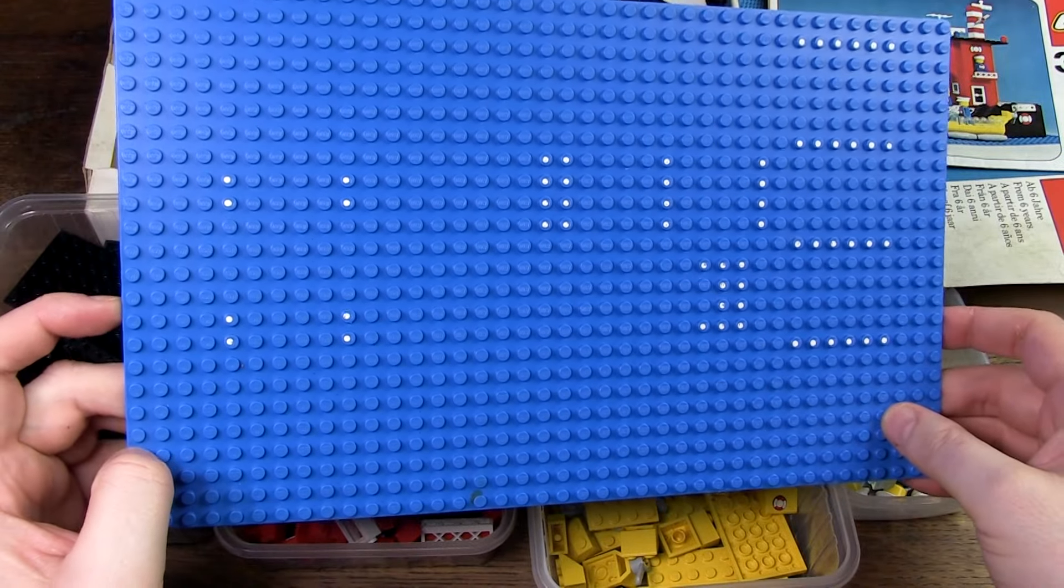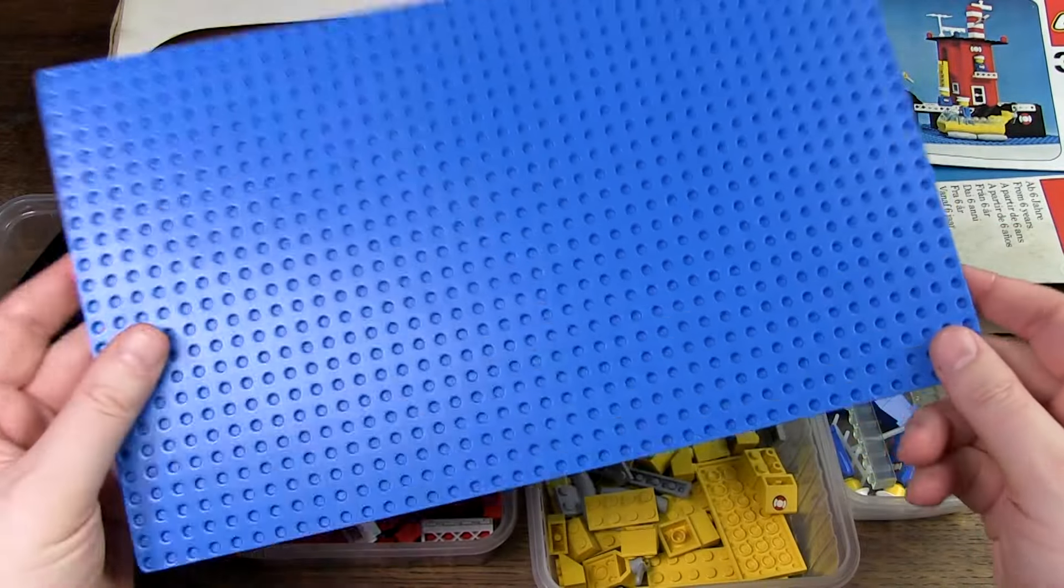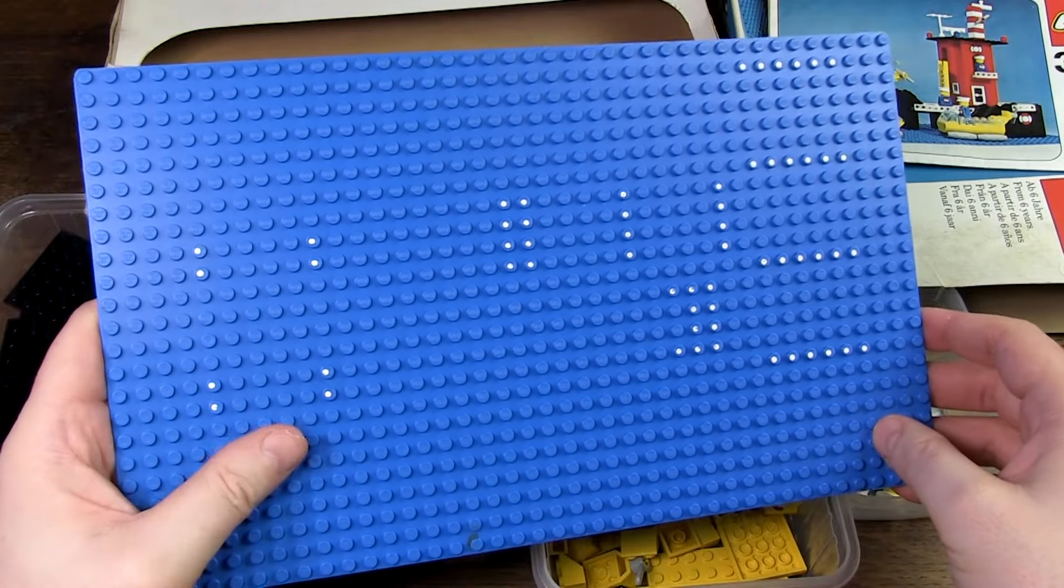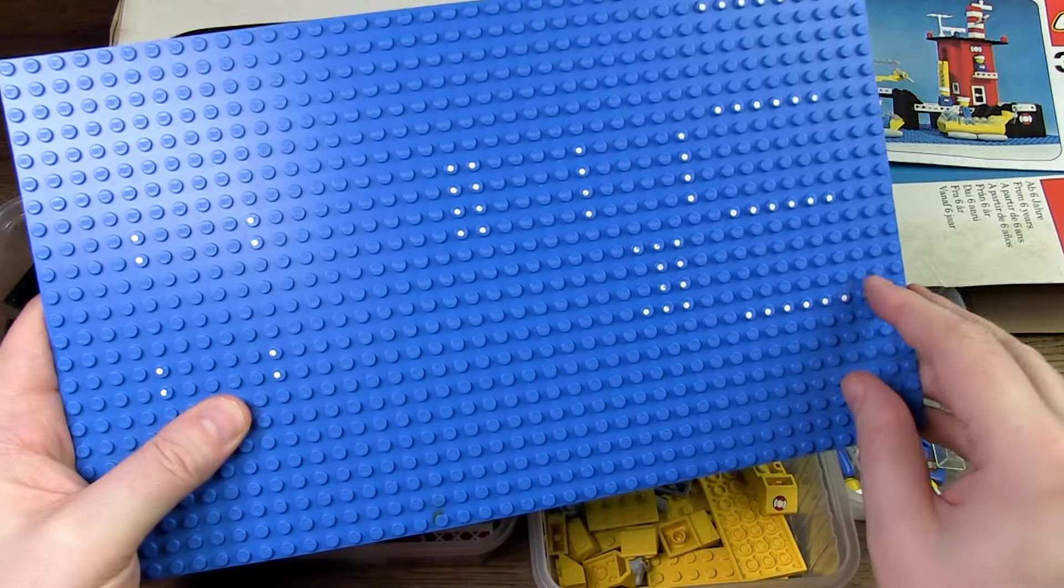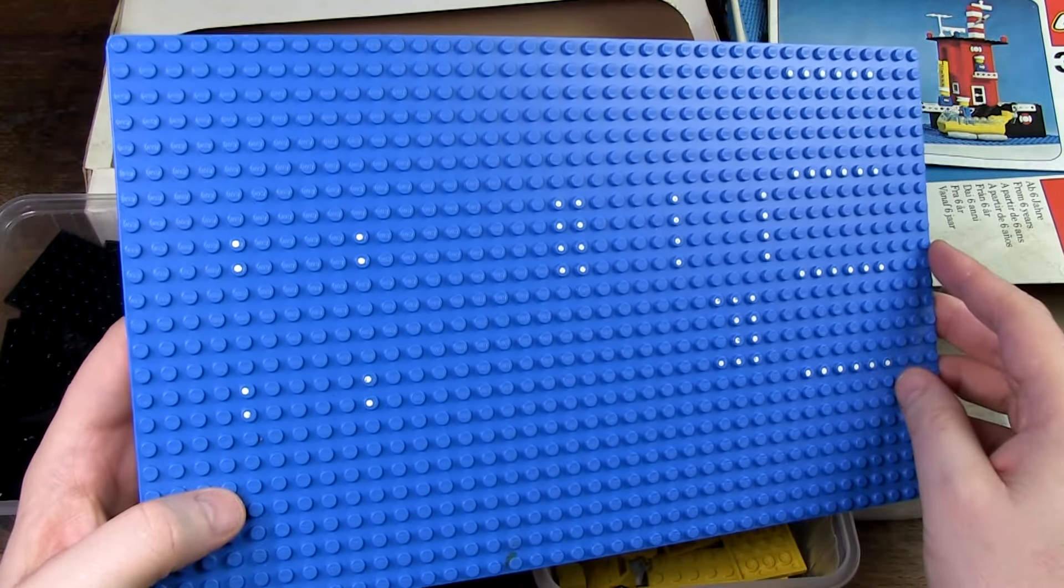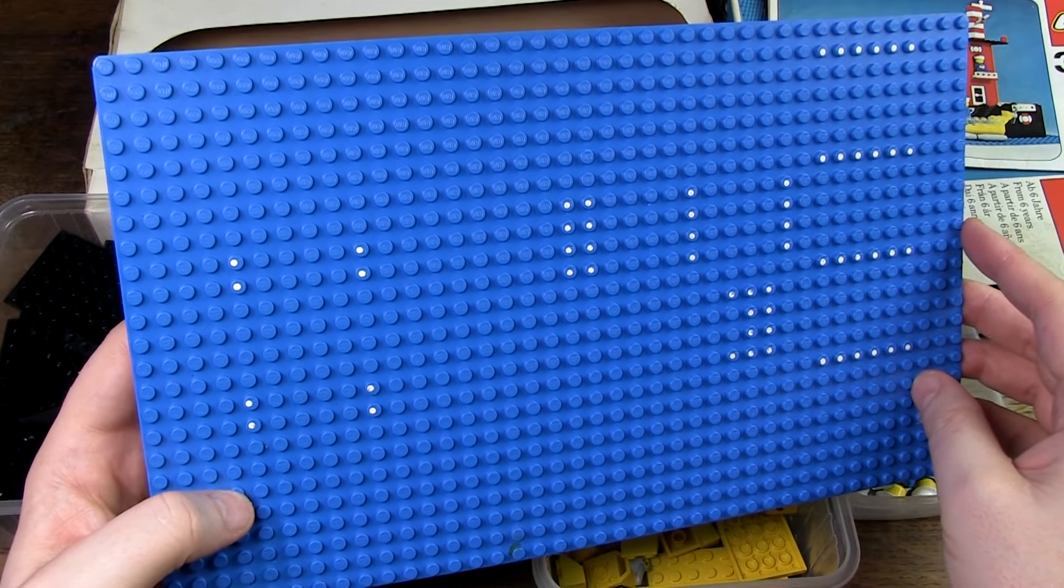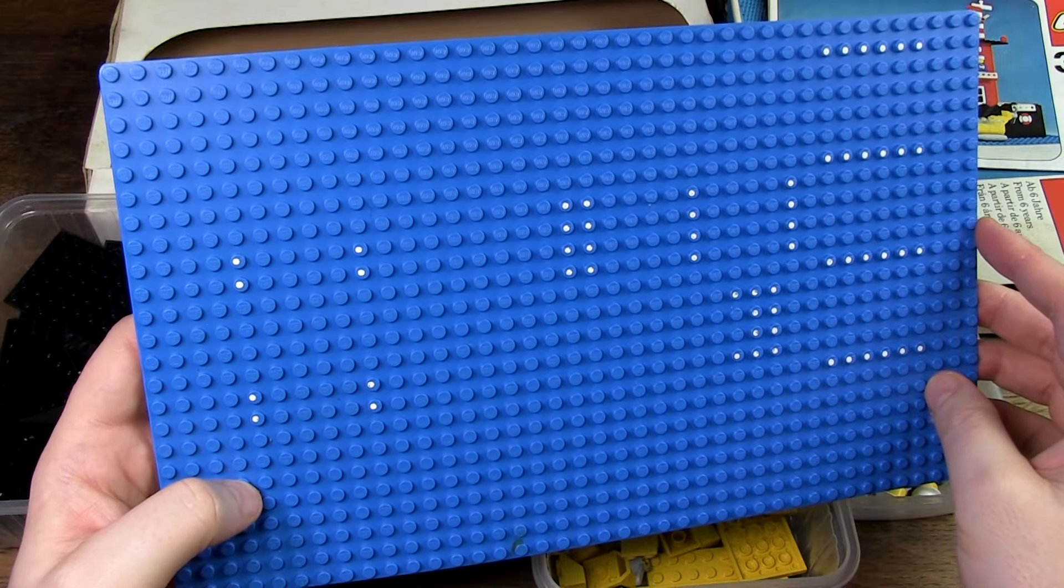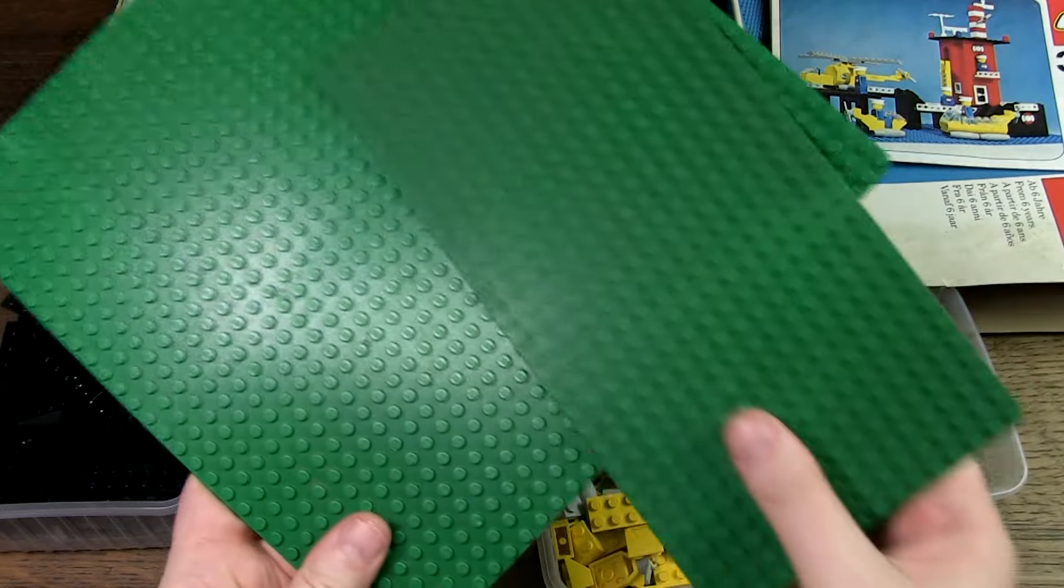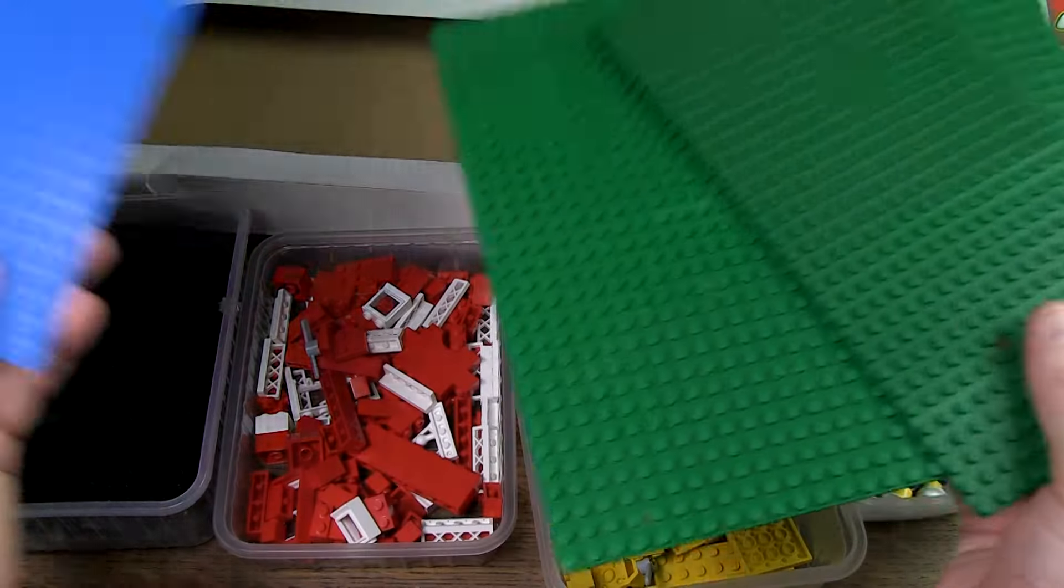Considering the theme, the base plate is of course blue. Complete blue base plates are not very common in sets. And this one also has white dots on the plate. This way you can see where to start building. These dots have been applied specifically for this set, which makes the base plate unique and is therefore only found in this set. And the size is not very common either. Most base plates in my collection are 16x32 or 32x32. This base plate is 24x40.